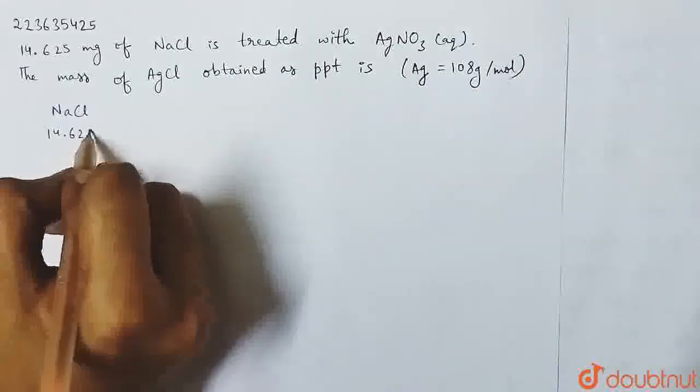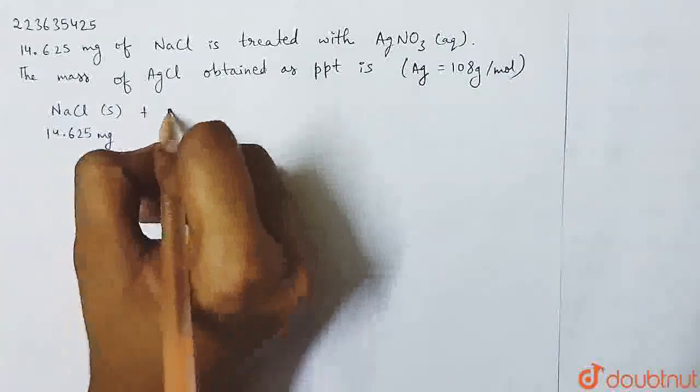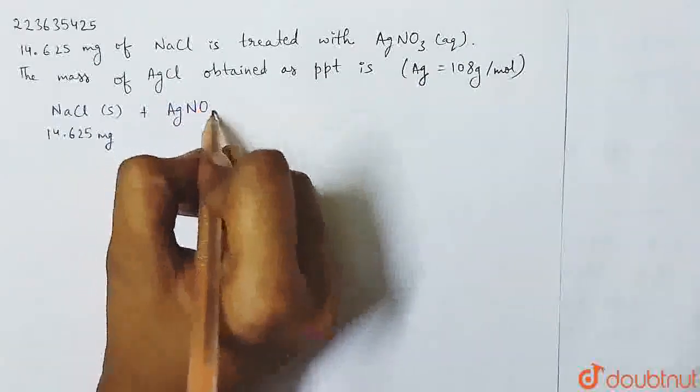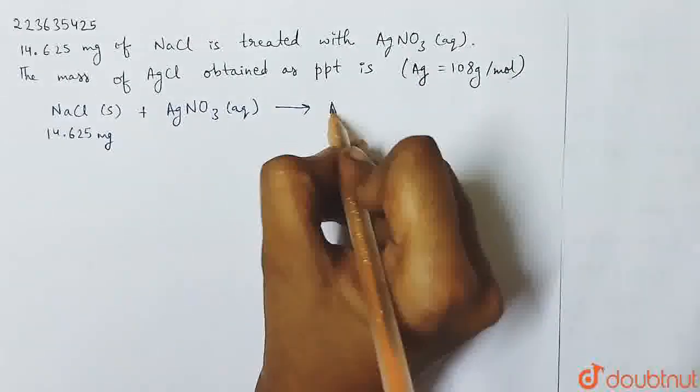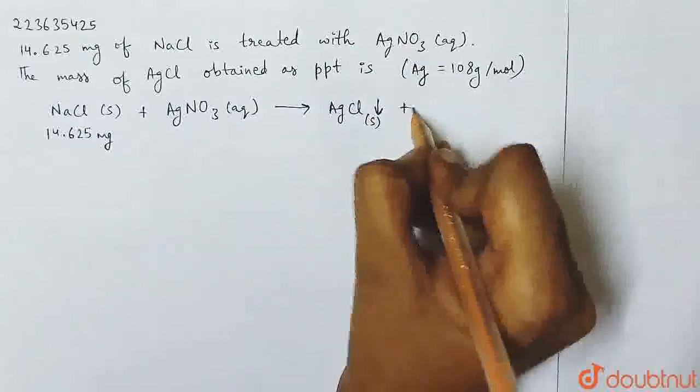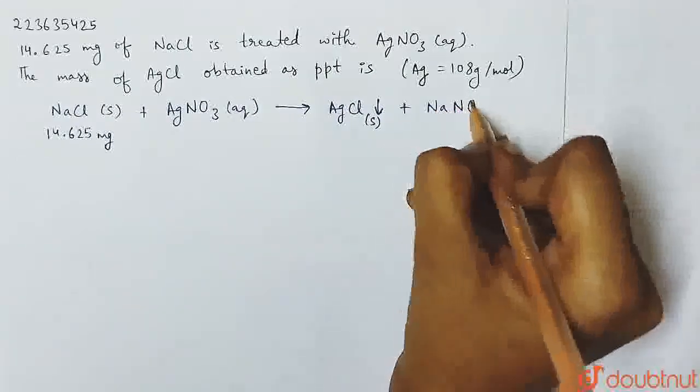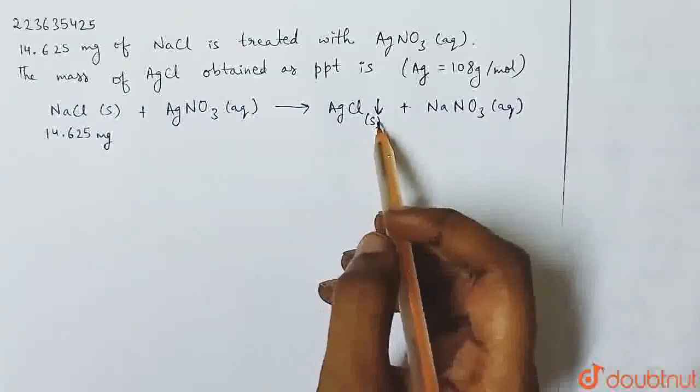We have got AgCl precipitate and we have got sodium nitrate. We have to find the mass of AgCl obtained.